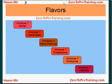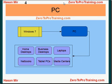Windows 7 is an operating system for personal computers known as PCs. A PC may include home and business desktops, laptops, netbooks, tablet PCs, and media centers.